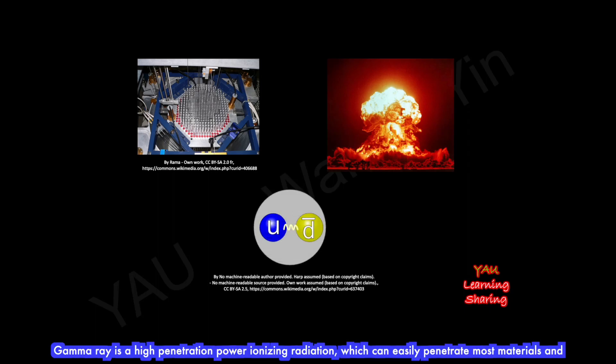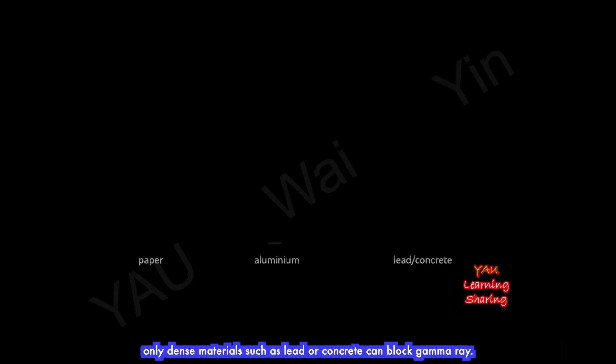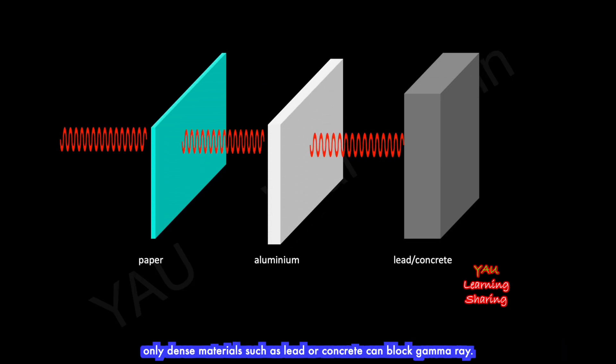Gamma-ray is a high-penetration power ionizing radiation that can easily penetrate most materials. Only dense materials such as lead or concrete can block gamma-rays.